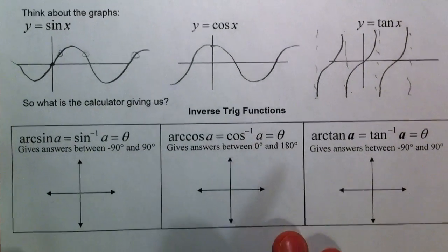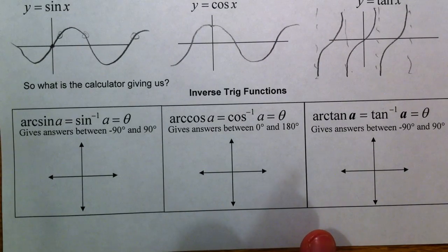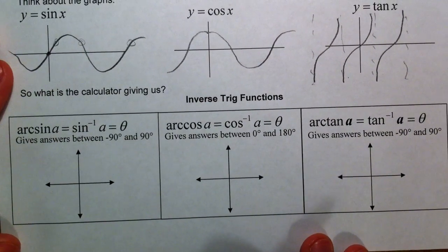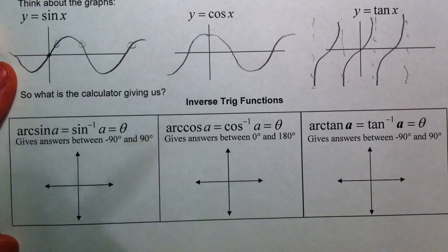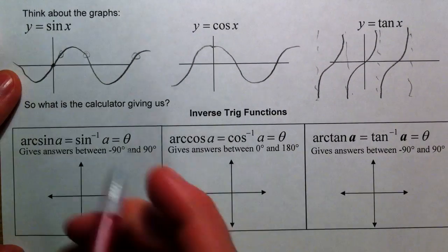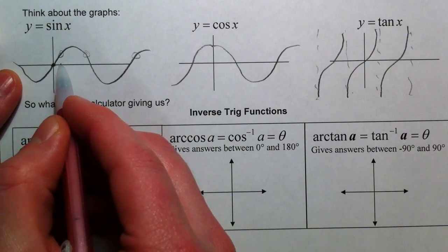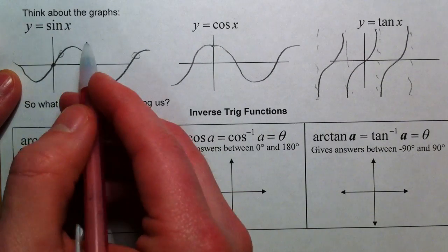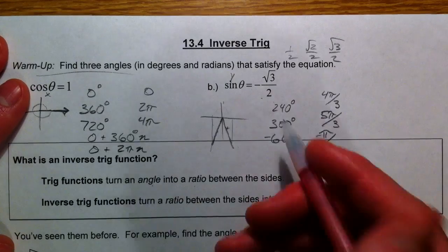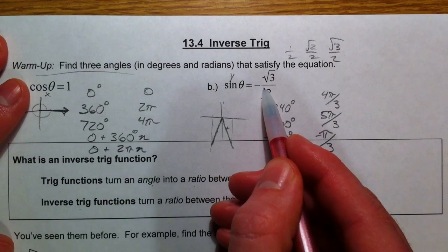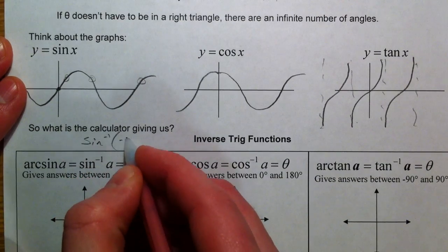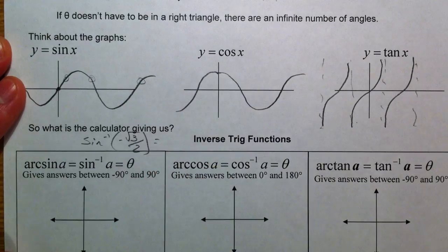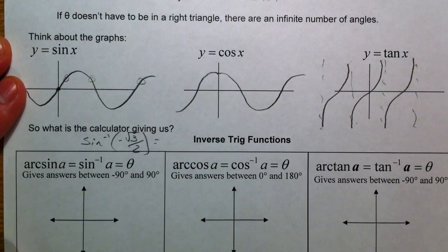So here's the deal. This is what the calculator gives us, and here's why. Functions are defined that if you only have one input, you better only have one answer - every question only has one answer, every x only has one y. So if I want to know sine of something, sine of some angle gives me negative root three over two. If I say inverse sine of negative root three over two, it better only have one answer.